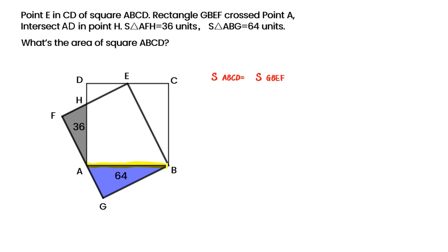ABE is a common sector of square and rectangle. So we can calculate area of triangle DEH plus area of triangle BCE equals to 100 units.